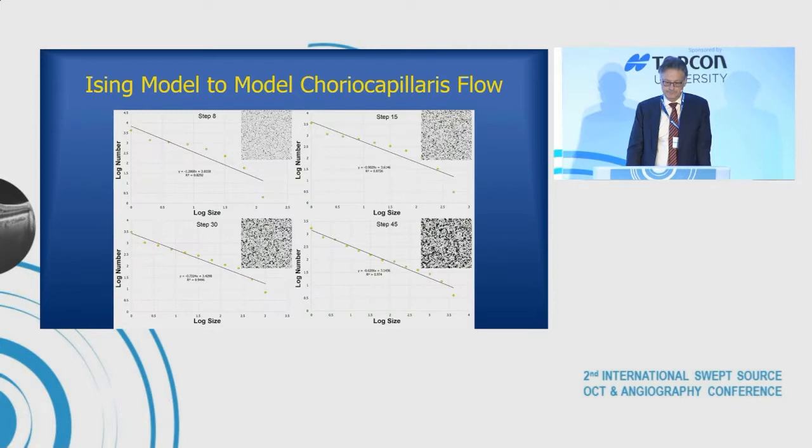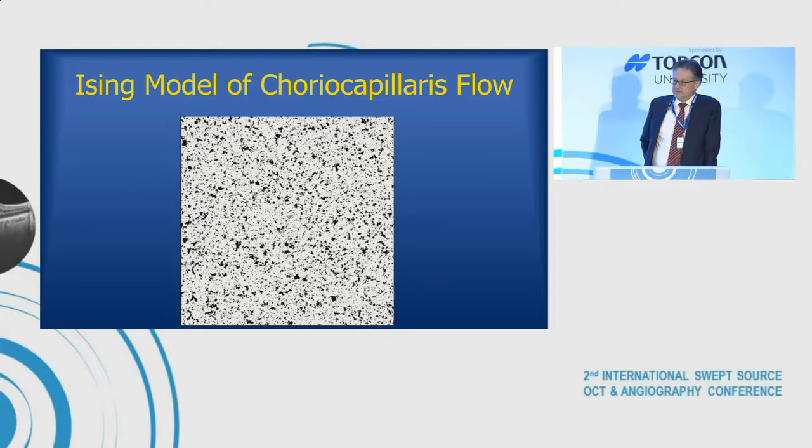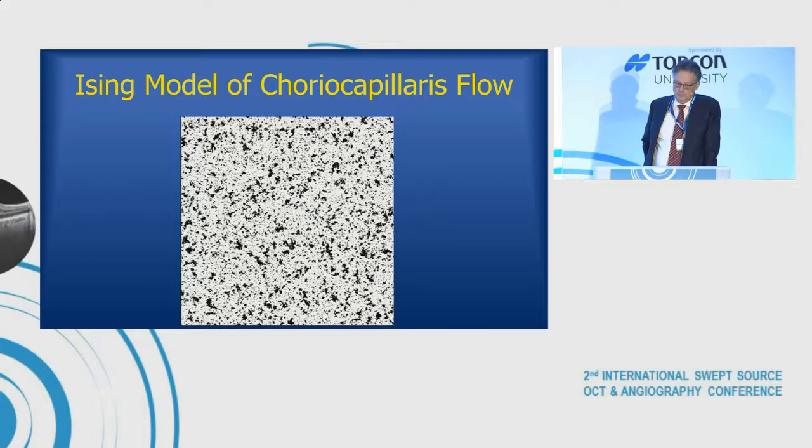We can apply the same Ising model concept to modeling choriocapillaris flow. You can see the progression of changes that happens over time, emulating what happens as people age — they get more and more of these defects. You can make it into a movie showing an Ising model of what a person's choriocapillaris would look like as they got older. The black zones come and go but aggregate into bigger ones over time, and at any one step it follows a power law characteristic.